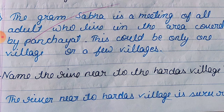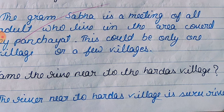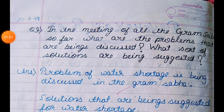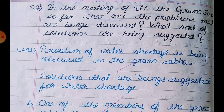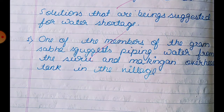Question 2: The river near Hardas village is the Suru river. Question 3: In the meetings of Gram Sabha, the problem of water storage is being discussed, and solutions are being suggested. One member of the Gram Sabha suggested piping water from the Suru river and making an overhead tank in the village.